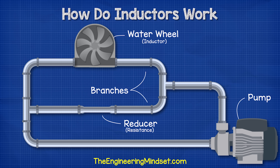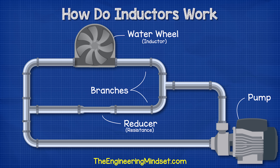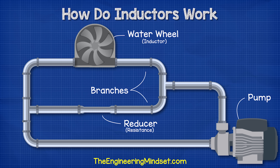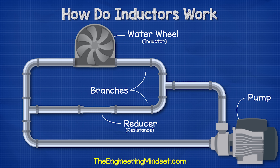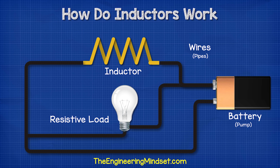The other branch has a water wheel built into it. The water wheel can rotate, and the water flowing through it will cause it to rotate. The wheel is very heavy though, so it takes some time to get it up to speed and the water has to keep pushing against it to get it to move. This water wheel is going to be equivalent to our inductor.